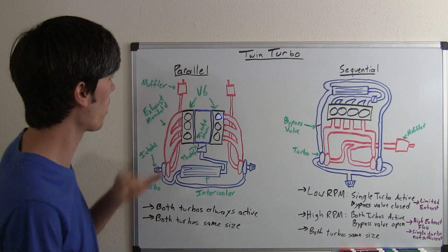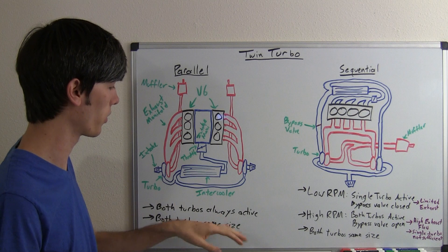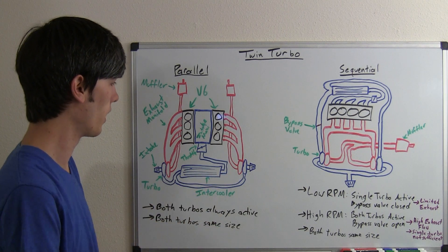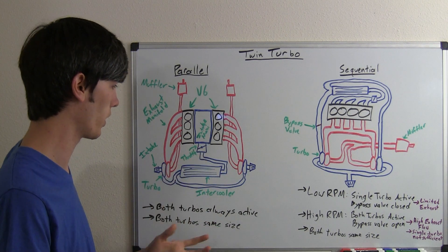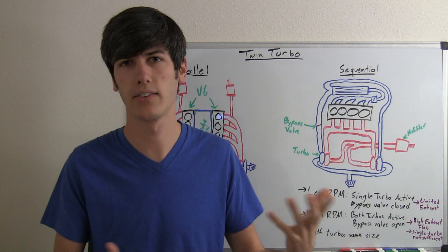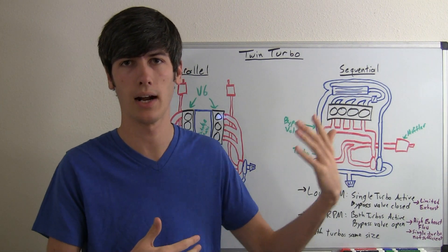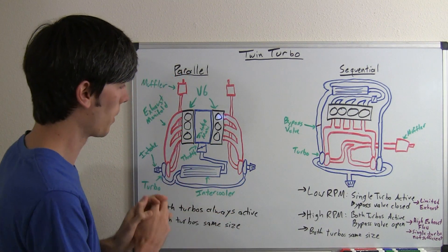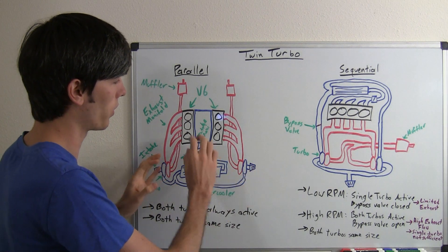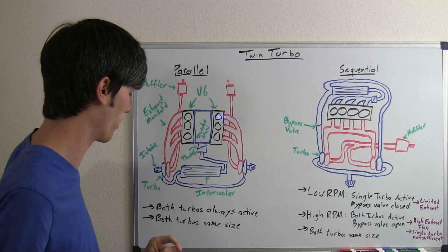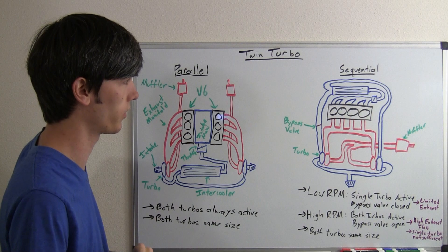So, things to note in parallel is that both turbos are always going to be active for the entire RPM range. Well, they may not if you size them so that they spool up at a higher RPM. That's fine, but point is they're both always going to have exhaust flow directed towards them. And both turbos are the same size as I mentioned.